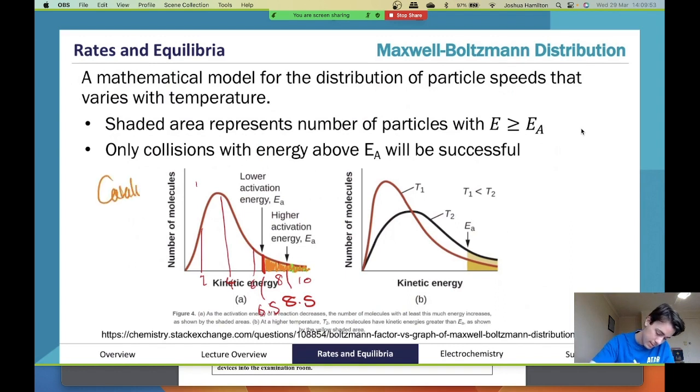Now what happens if we actually increase the temperature? What happens is we actually manipulate the curve. We don't move the activation energy line, we manipulate the curve. As you can see here, this was the original curve. Then when we increase the temperature, what we do is we actually flatten out the curve and push it forward. So we push it forward by going like this instead of going straight up, and we flatten it by not getting as high.